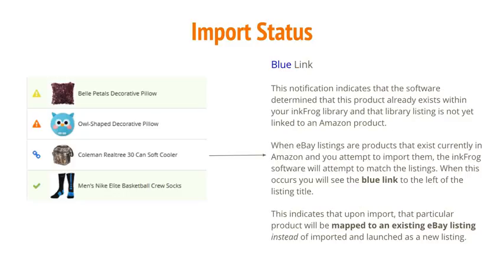The blue link notification indicates that the software determined that this product already exists within your InkFrog library, and that the library listing is not yet linked to an Amazon product. When eBay listings are products that currently exist in Amazon and you attempt to import them, the InkFrog software will attempt to match the listings. When this occurs, you will see the blue link to the left of the listing title, indicating that upon import, that particular product will be mapped to an existing eBay listing instead of imported and launched as a new listing.